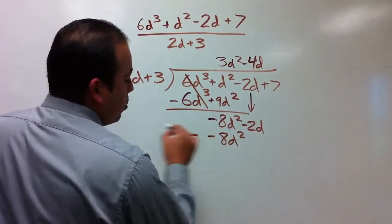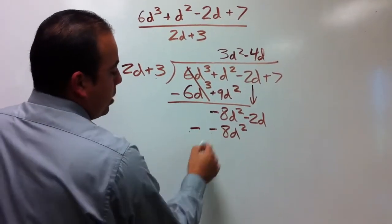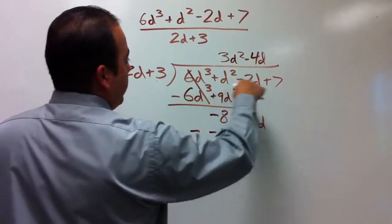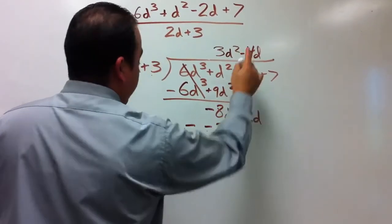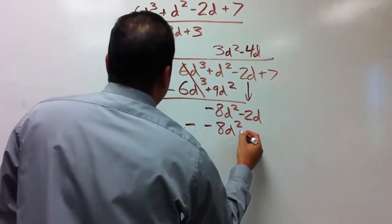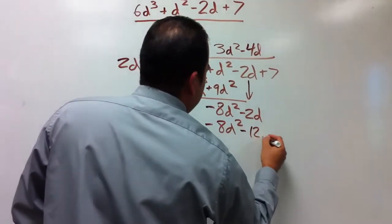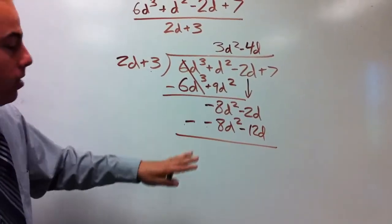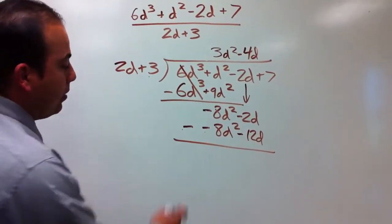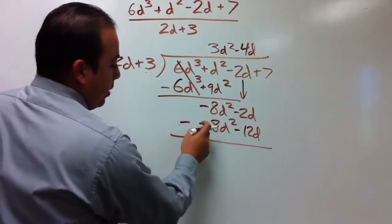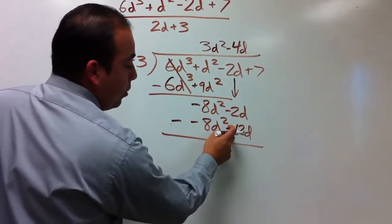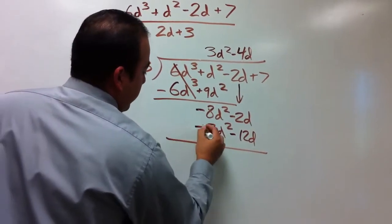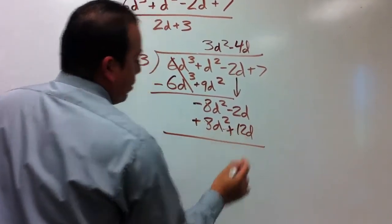Remember, you're subtracting these, so these two subtraction symbols are going to turn all these positive. Now we have 3 times -4d, which gives me -12d. In order to simplify this so you can see that these negatives are touching, since these negatives are touching, they're going to turn to a positive, and so is this one. So I'm going to erase all the negatives down here and turn them into positives.